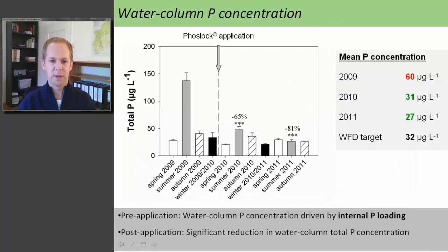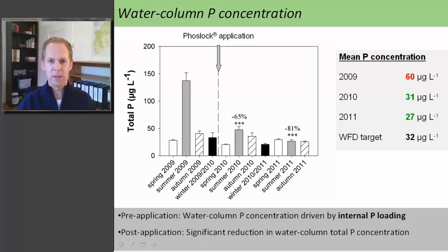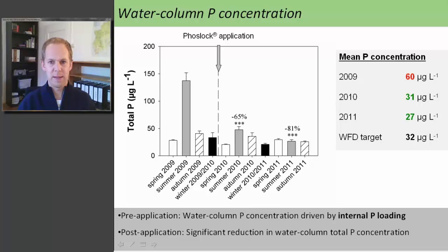On the x-axis you can see time, and on the y-axis is the total phosphorus concentration. Focusing on 2009, prior to the application, we had the highest phosphorus concentrations in summer. This seasonality of high summer concentrations is quite typical for shallow lakes suffering from internal phosphorus loading. The dashed line shows the timing of the PhosLoc application. Following the application, we had significantly lower phosphorus concentrations in the water column, particularly in summer. Although Loch Flemington is too small to be considered under the Water Framework Directive, the applicable target for this lake type is 32 micrograms per liter. The lake would fail this target in 2009, but would pass it in the first and second year after the application.